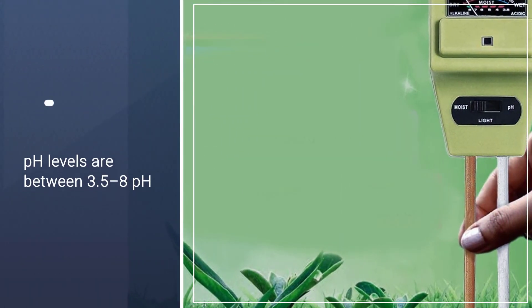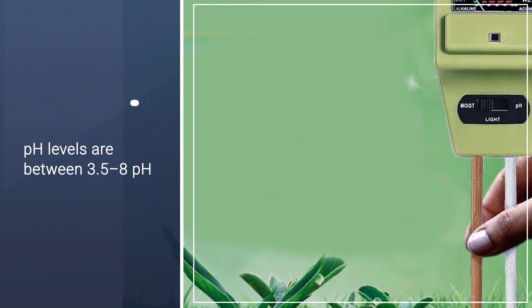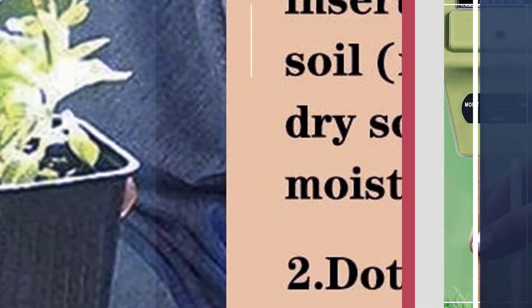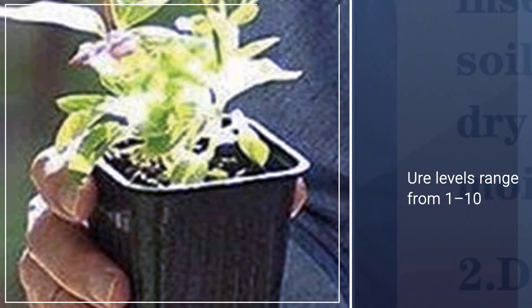pH levels are between 3.5 to 8. Moisture levels range from 1 to 10. Light temperature levels are from dark to light and 0 to 2000 lux.